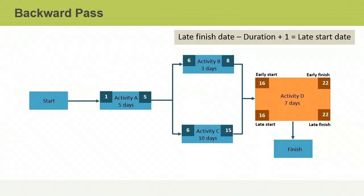Next, you need to perform a backward pass through the same schedule network diagram to establish the latest start and finish dates for the project. To begin the backward pass, the late finish date will usually be the early finish date of the last activity in the project, which is May 22nd. To calculate the late start date, you subtract the duration of Activity D from the late finish date, and also add one day because the last day of the project is included as a working day. In this case, the calculation is May 22nd minus 7 days plus 1, which equals May 16th.